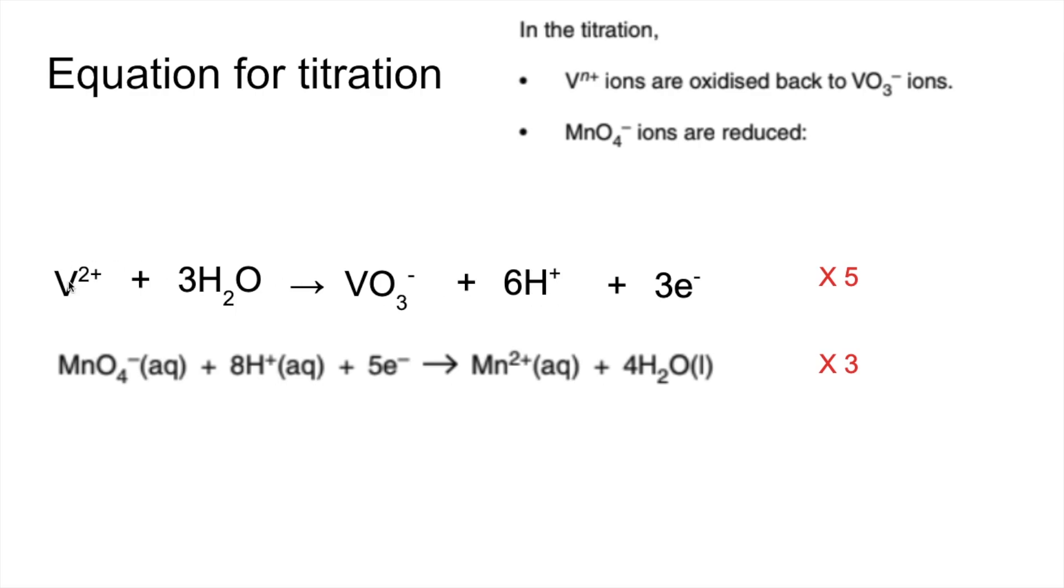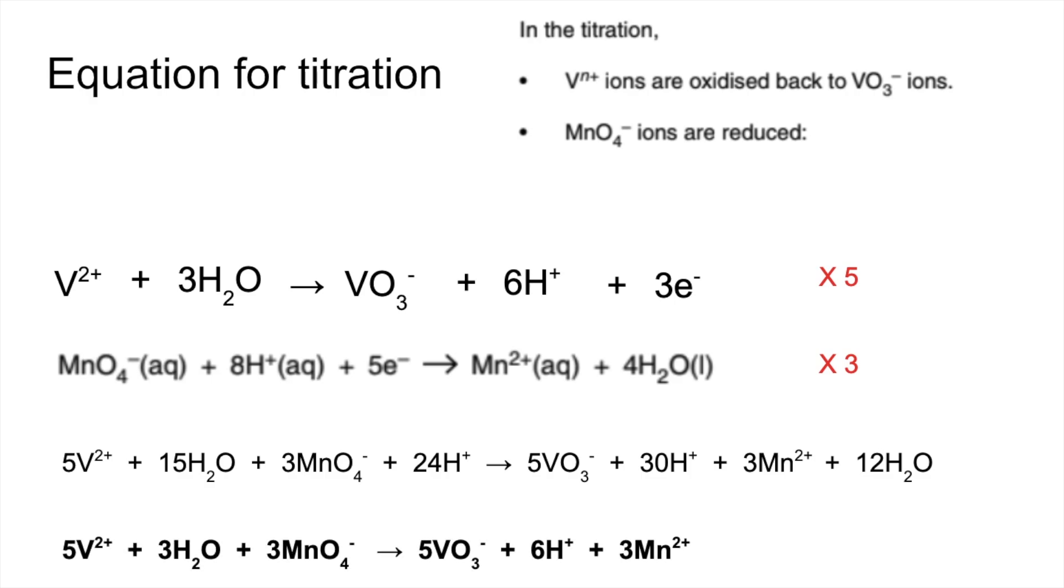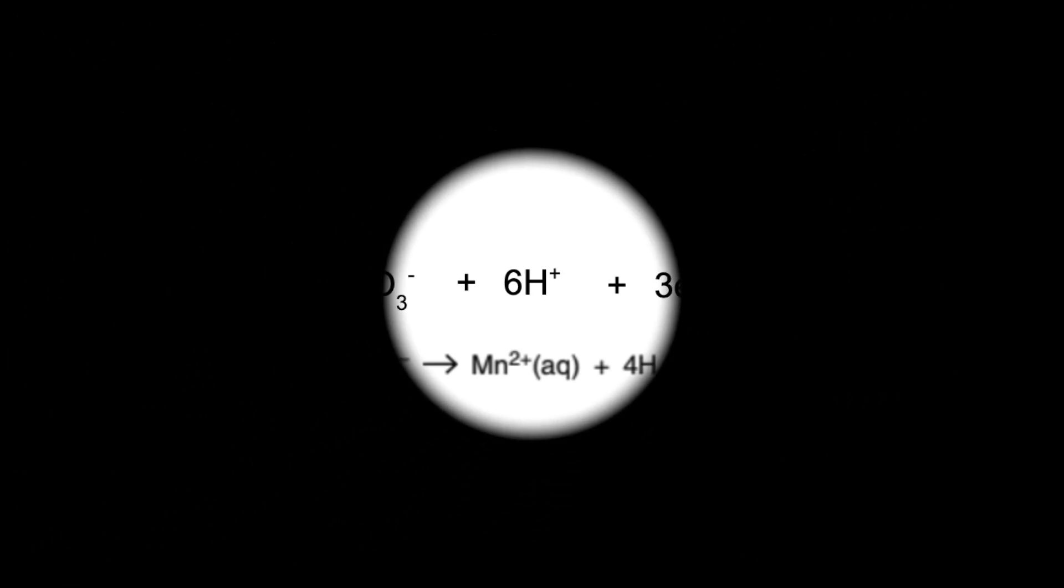So 5 of those to 3 of those. So when you combine the two half equations, you get that. Obviously, I've got rid of the electrons now because I know they're definitely going to cancel. And now I'm just going to cancel down the waters and the H pluses to the final equation, which gives us that.